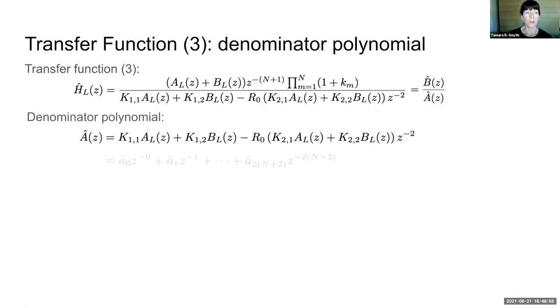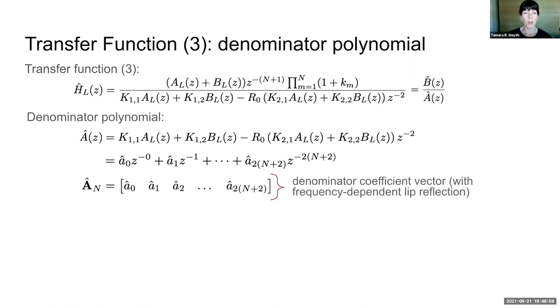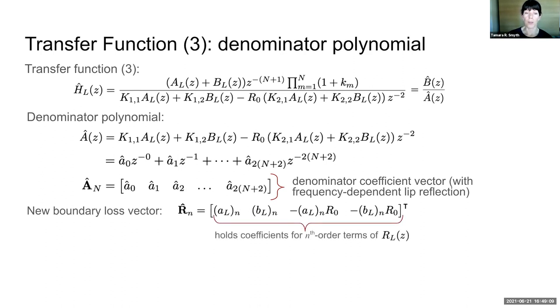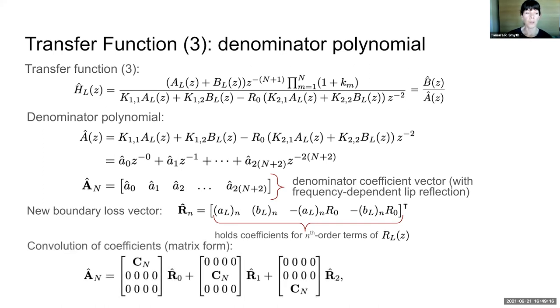The denominator polynomial now is no longer interleaved with zeros. And we can actually compute this coefficient vector by defining a new boundary loss vector that holds the coefficients for the nth-order terms of our reflection filter. Using a convolution given here in matrix form, we can then compute the coefficient vector a hat sub n that incorporates the frequency-dependent lip reflection.